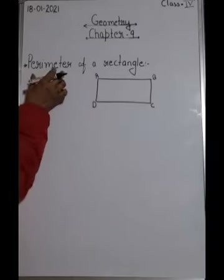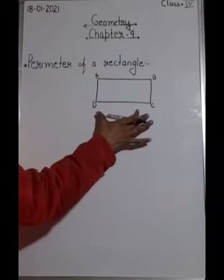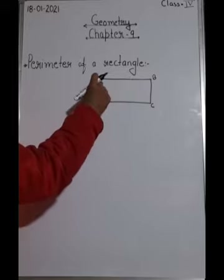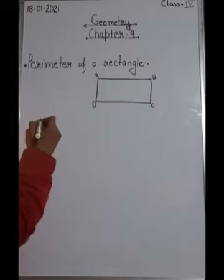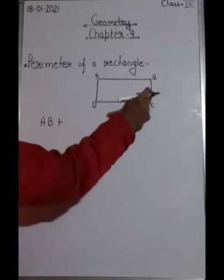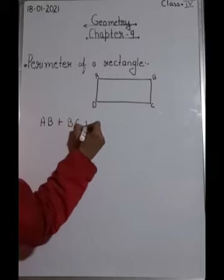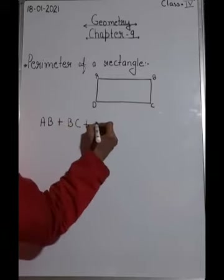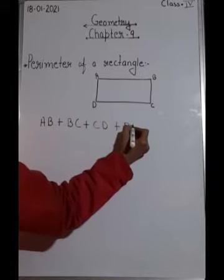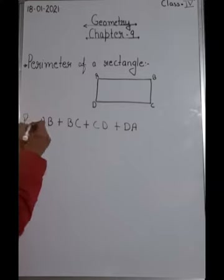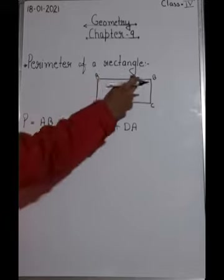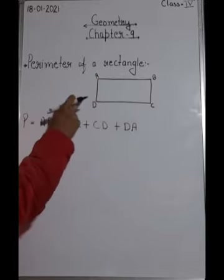Now, the perimeter of a rectangle. I have drawn a rectangle, and perimeter is the sum of boundaries. So we write: AB + BC + CD + DA. This is the perimeter. We usually denote perimeter with capital P. So the perimeter of this rectangle is AB + BC + CD + DA.